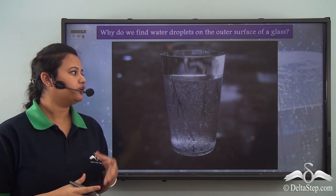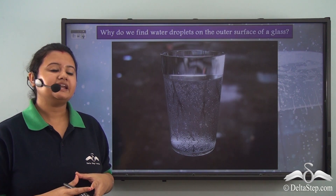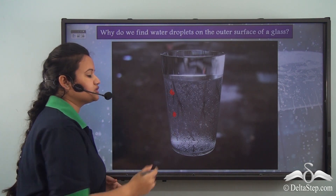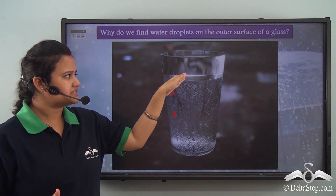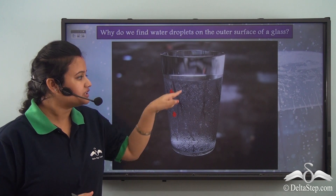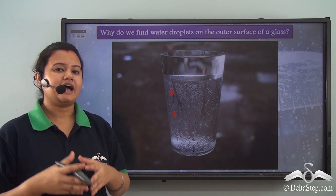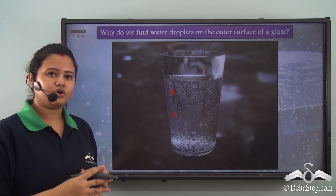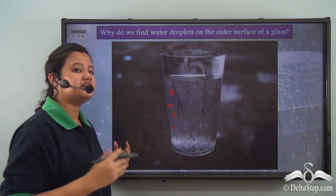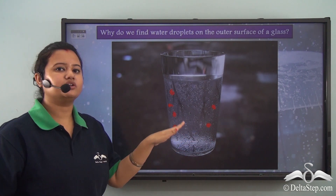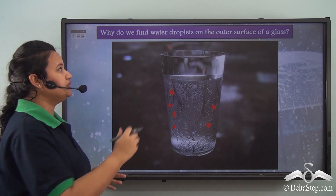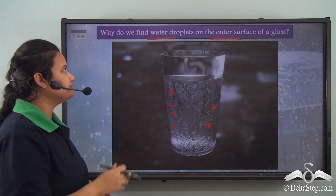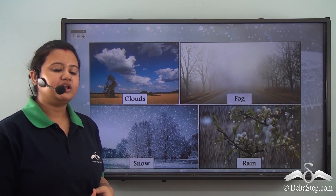If we take a filled glass or bottle out of a refrigerator and keep it at room temperature for some time, we observe water droplets on the surface of the glass. This is not the water inside the glass — the water in the surrounding has condensed at the surface. When surrounding air comes in contact with the cold surface of the glass, it condenses into tiny water droplets and settles on the surface.